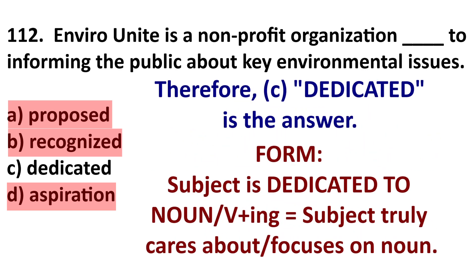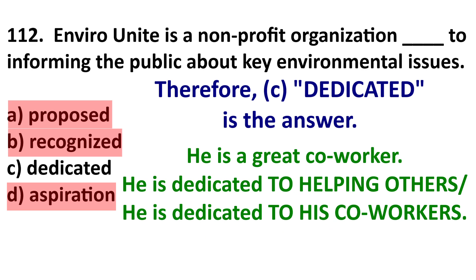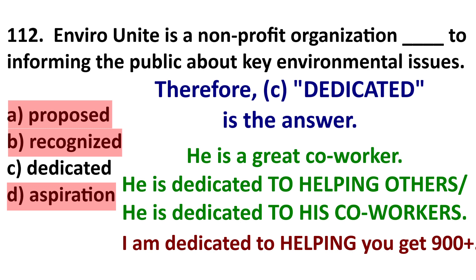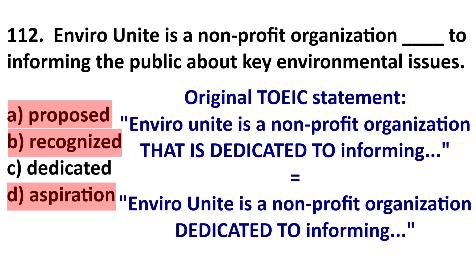Therefore the answer is C. 'Someone is dedicated to noun or verb-ing' means someone truly focuses on or cares about that thing. For example, 'he is dedicated to helping his co-workers.' So the original sentence is: 'Enviro Unite is a non-profit organization that is dedicated to informing the public about key environmental issues.' We remove 'that is' and get 'dedicated to informing.'